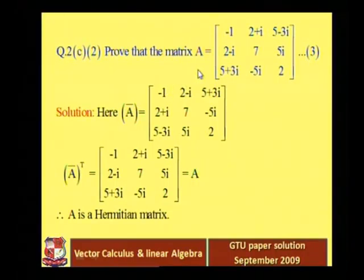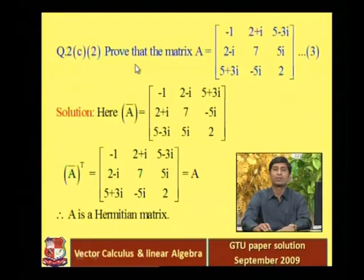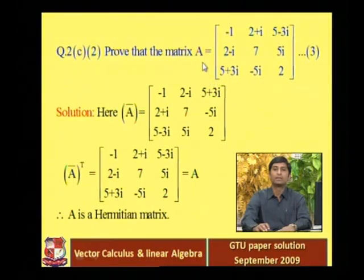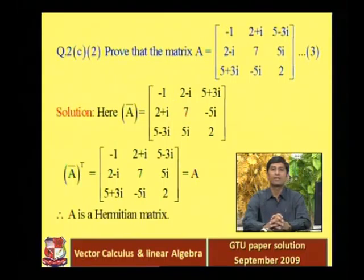Next: prove that the matrix A is a Hermitian matrix and that i×A is a skew-Hermitian matrix. This question is worth 3 marks. First, let's understand what a Hermitian matrix is. Here we have a complex matrix — some elements are complex numbers and some are real numbers.